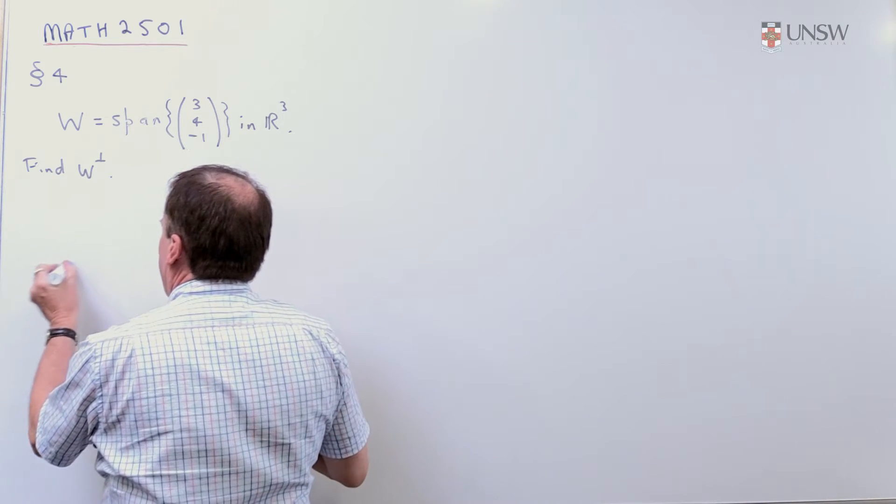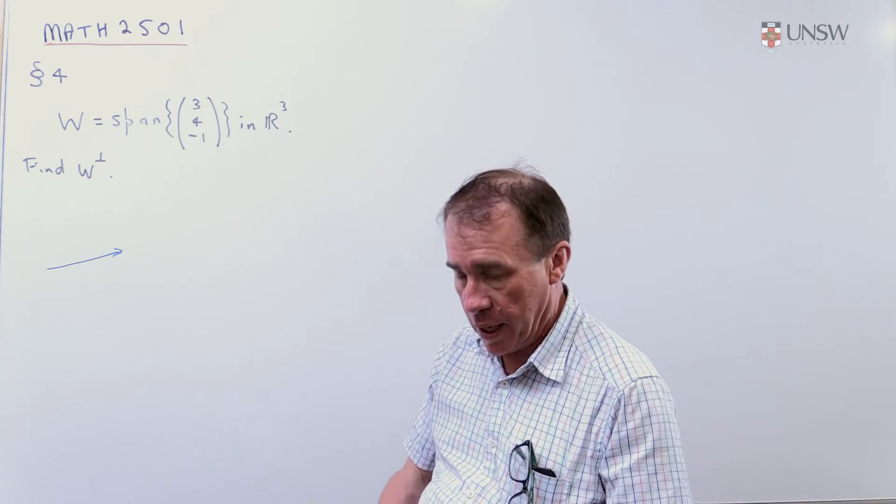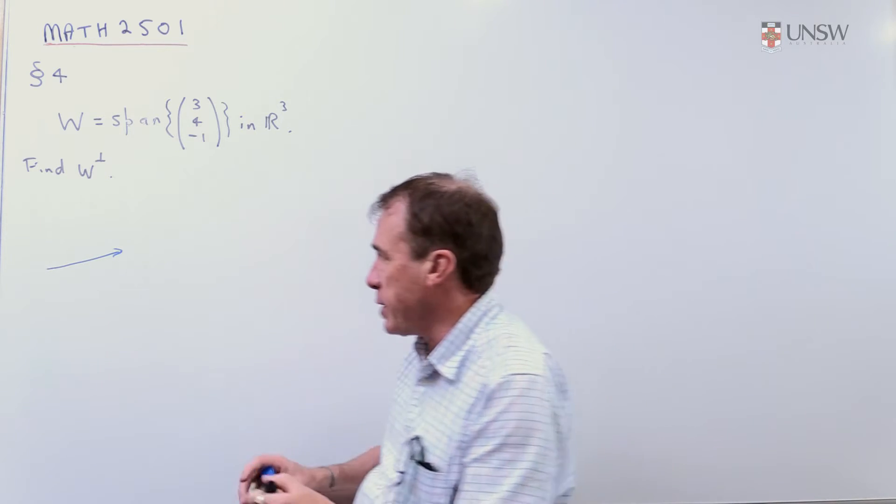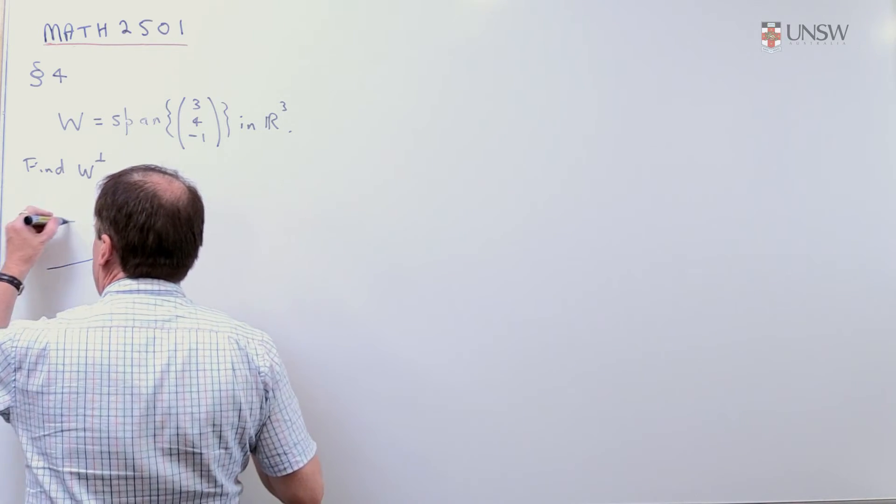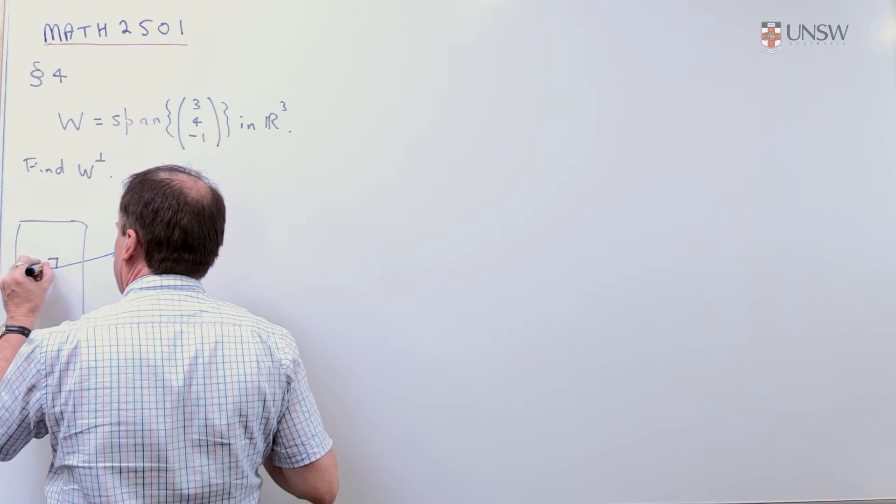If I've got a line, imagine this vector here, I want all the vectors perpendicular to that. If you think about it for a bit, you'll see that any vector which is perpendicular to that is going to lie on some plane where this is a right angle.